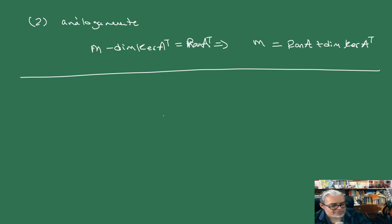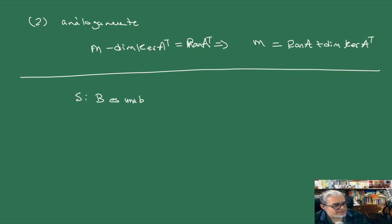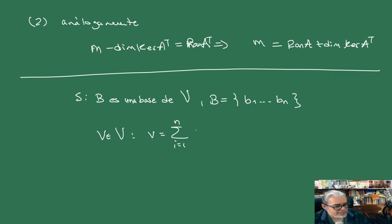Los cambios de base: podemos hacer una matriz con los cambios de base, todos los cambios de base van a representar una transformación. Como en cálculo que se habla de transformaciones de cambios de coordenadas, lo que estamos haciendo es inducir un cambio de base. Por ejemplo, si tenemos una base B con vectores b₁ hasta bₙ.